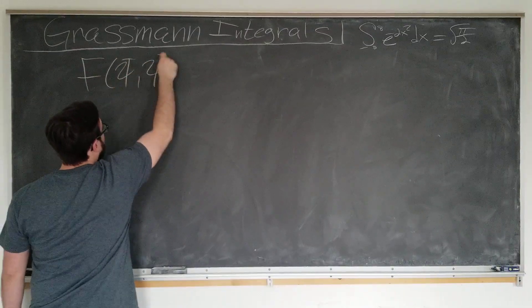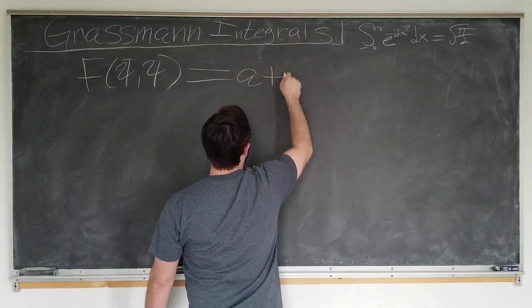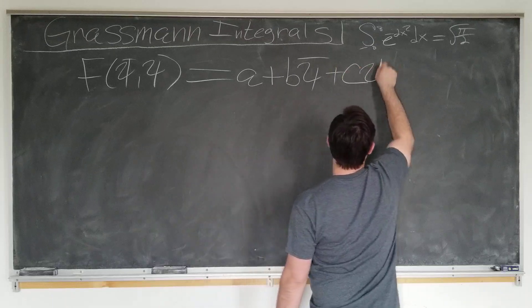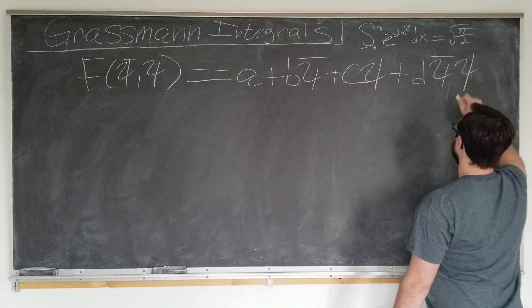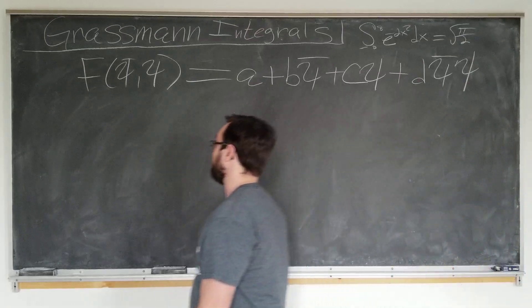f of psi bar and psi. We can expand as some constant plus another constant times psi bar, plus a third constant times psi, plus a final constant times psi bar psi. And we'll apply what we know to see what we can do for this integral here.